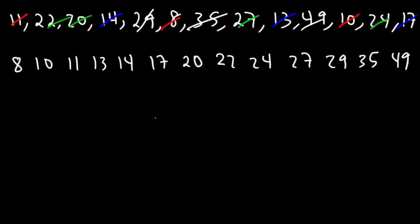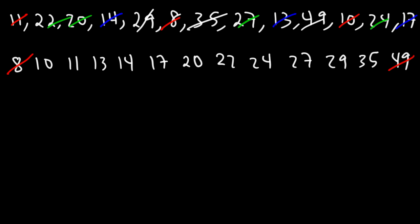At this point we have a total of 13 numbers in our list. The first thing is to break the data into two equal parts. Let's calculate Q2, which is the median of the entire data set. If we eliminate numbers from both sides until we get the middle number, this gives us the median, which is 20. I'm going to draw a line and put 20 on top — this is the second quartile.